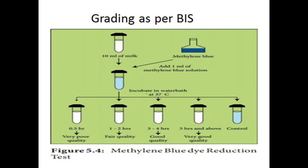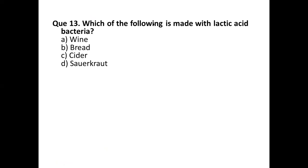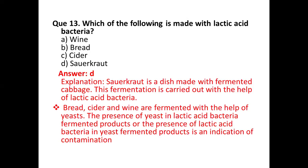Question number thirteen: which of the following is made with lactic acid bacteria? Options are: (a) wine, (b) bread, (c) cider, (d) sauerkraut. The correct answer is option (d) sauerkraut — a dish made with fermented cabbage. This fermentation is carried out with the help of lactic acid bacteria. Bread, cider, and wine are fermented with the help of yeast; the presence of lactic acid bacteria in yeast-fermented products is an indication of contamination.